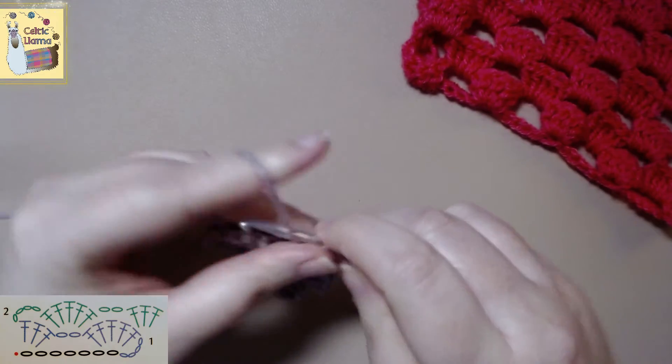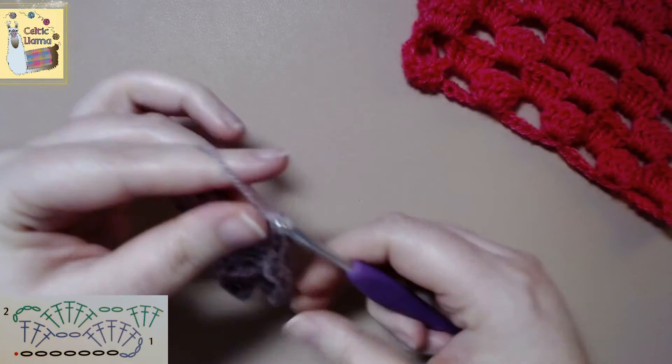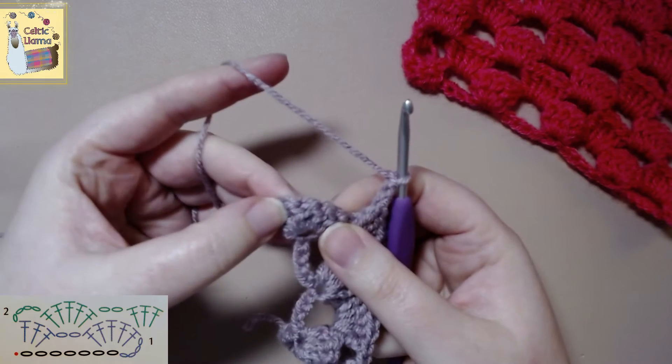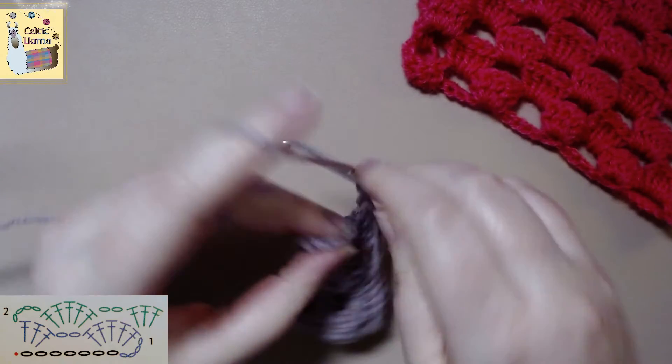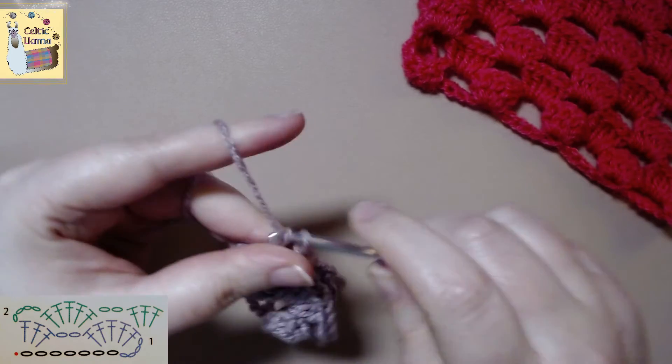So we're finishing our last part of this row. To finish it off we will chain two, work three double crochets at the end stitch. You always want to make sure that you end your work with three double crochets.